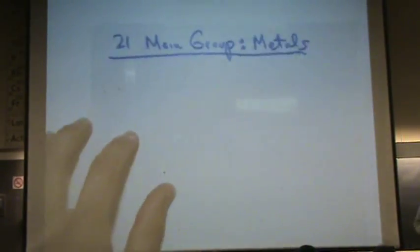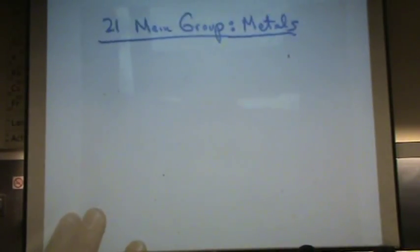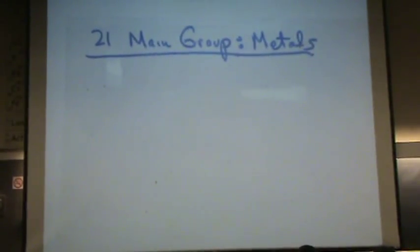Why the heck are we doing main group, or what's the unique characteristics? The columns, just like before from the periodic table, similar columns have similar properties.